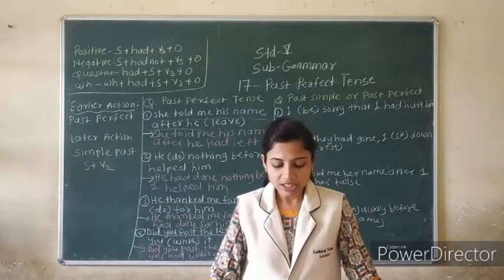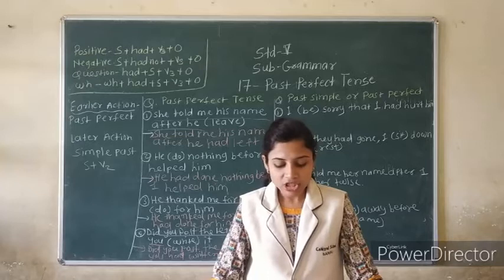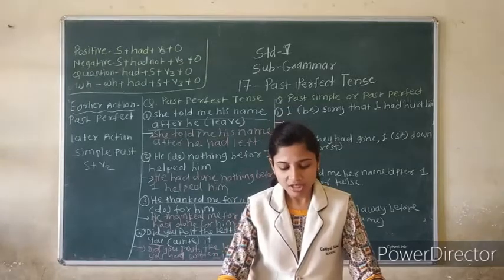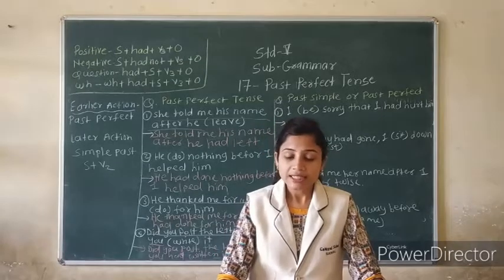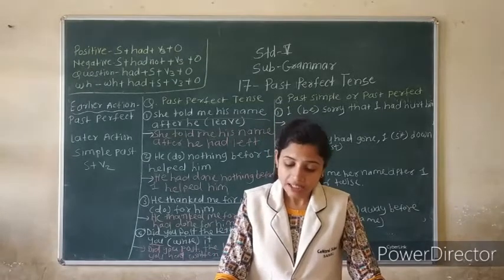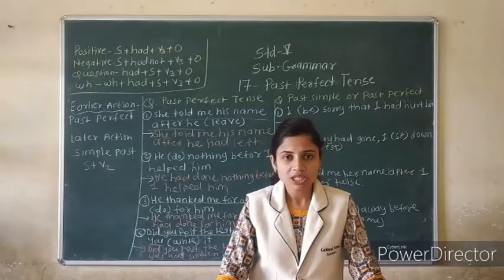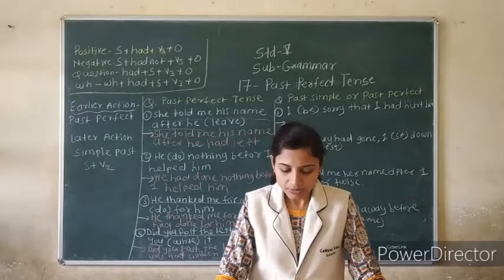17: 'They killed the child before the police caught him.' Answer: 'They had killed the child before the police caught him.'